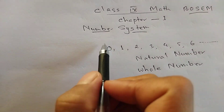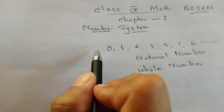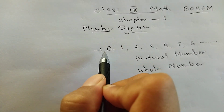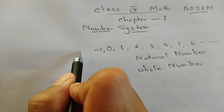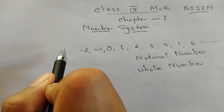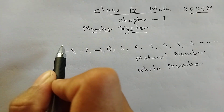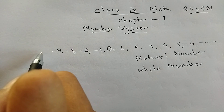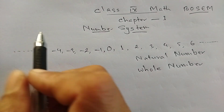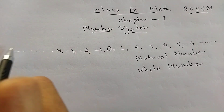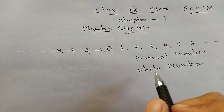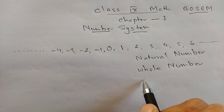Again, 0 is included, then minus 1, minus 2, minus 3, minus 4 — this goes up to infinity. This is the integer.